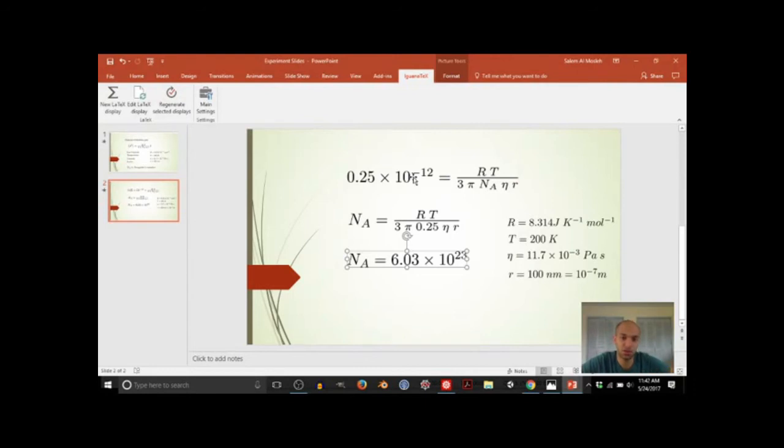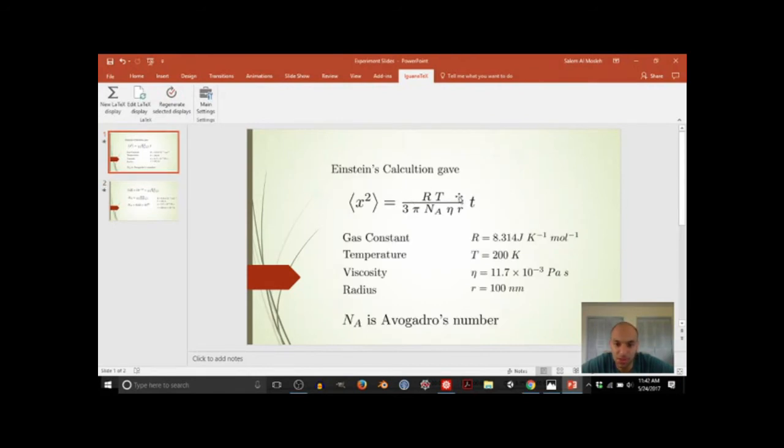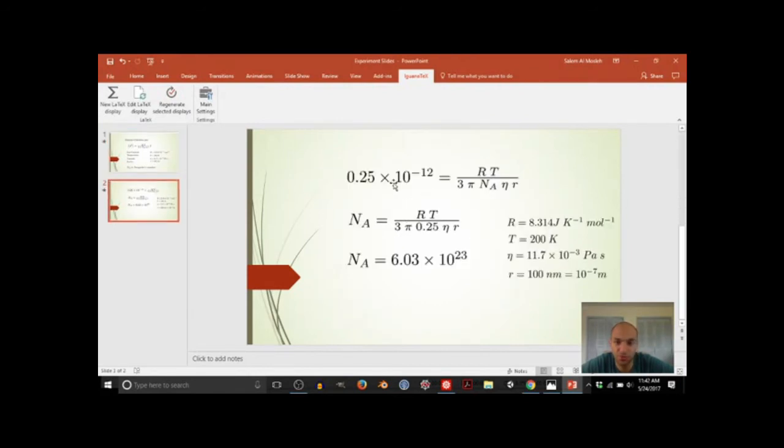And so we got for the slope of this relationship this 0.25, and so now everything is known here: the gas constant, the temperature, the viscosity, and the radius of the small particle that you can see in the microscope. So putting all that together, we can solve for Avogadro's number.